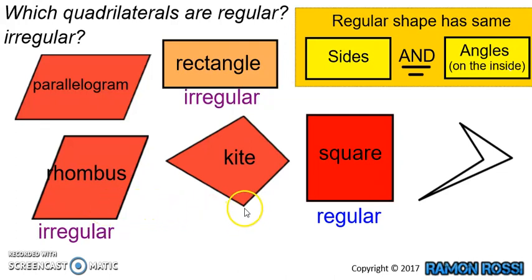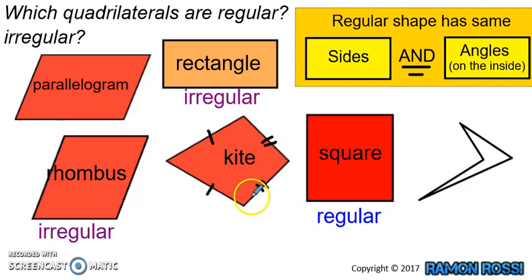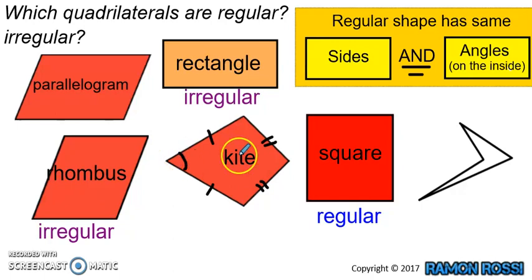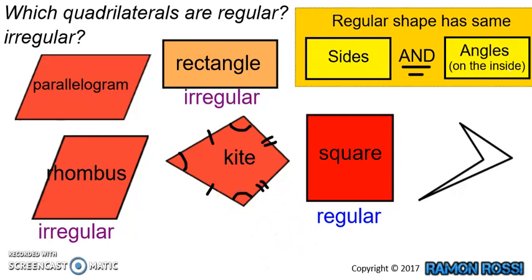Now let's look at the kite. The kite has different length sides — this side looks the same as this side, and this side and this side look the same in length, but they're not all the same — so it doesn't tick the box for all sides being equal, and it is irregular. The angles on the inside are also not the same: this one is acute, and these two here are obtuse — so the angles are not the same either.